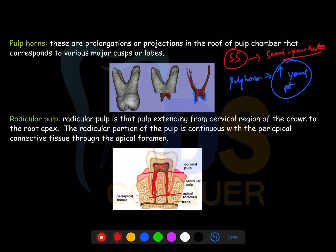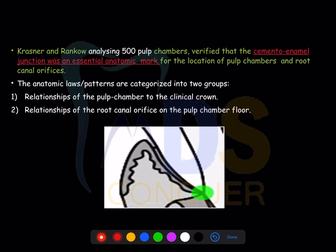The next covers two important scientist names commonly asked in exams — remember them as 'RK', related to root canal. These scientists, mainly concerned with landmarks and principles, analyzed 500 pulp chambers and concluded there are important landmarks, specifically the cemento-dentinal junction and the cemento-enamel junction.